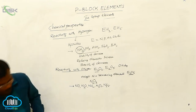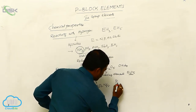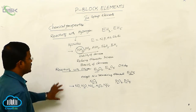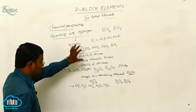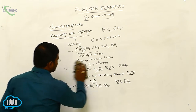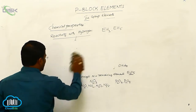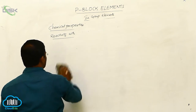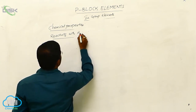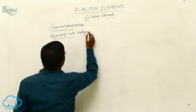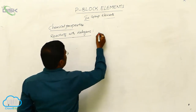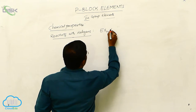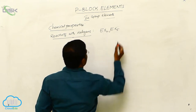Phosphorus can also produce P2O3 and P2O5 — phosphorus trioxide and phosphorus pentoxide — as types of oxides resulting from the reaction of Group 5A elements with oxygen. Additionally, Group 5A elements also react with halogens and produce halides of EX3 and EX5 type of species.